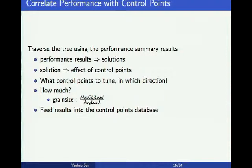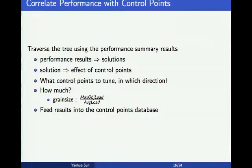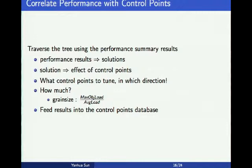Each solution also tells us whether to decrease or increase the control point value, and some solutions tell us by how much to change it. For example, if we find some object's load is much more than the average load, we divide the maximum object load by the average load to know how many pieces to split the large object into. Based on this result and the current value, tune direction, and step size, we can pick up the next configuration for better performance.